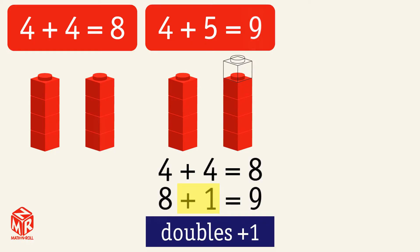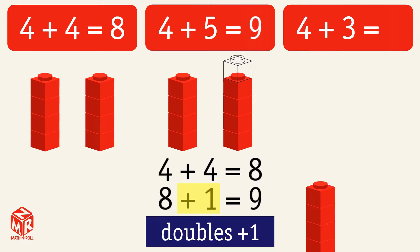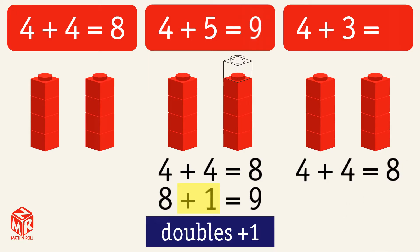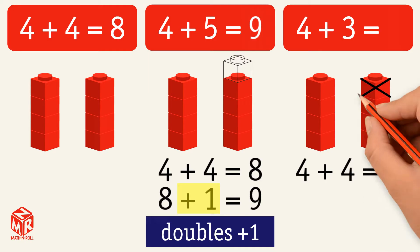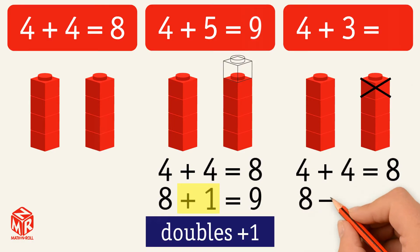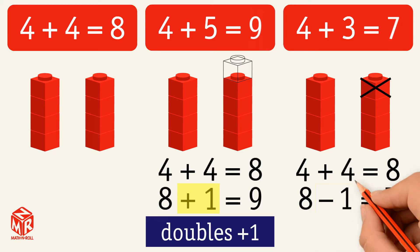We can use the same doubles fact, 4 plus 4 equals 8, to do 4 plus 3. We know that 4 plus 4 equals 8, but we need 4 plus 3, which is one less. Now we have 4 plus 4 minus 1, which gives us 8 minus 1 equals 7. So 4 plus 3 equals 7. This is the doubles minus 1 strategy.